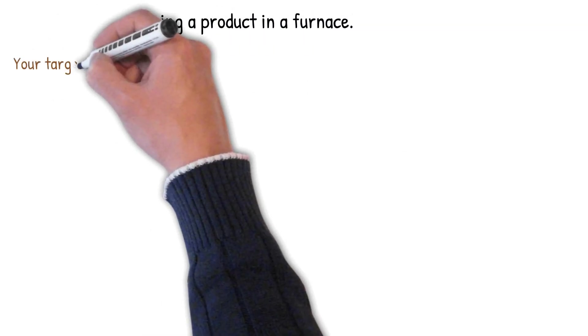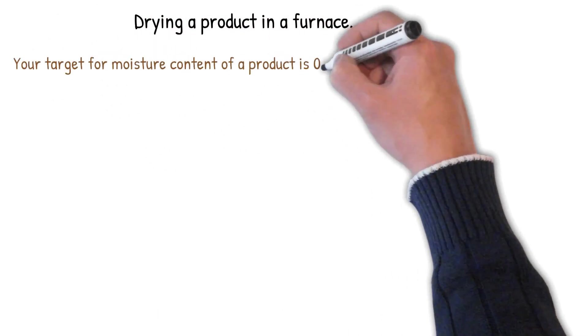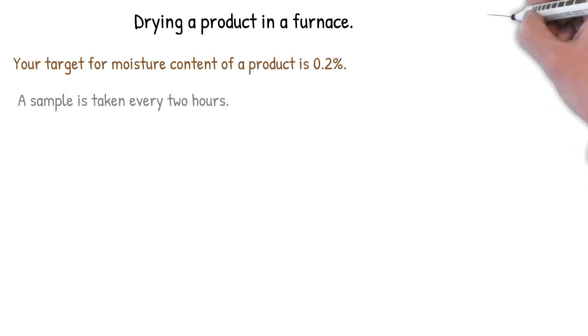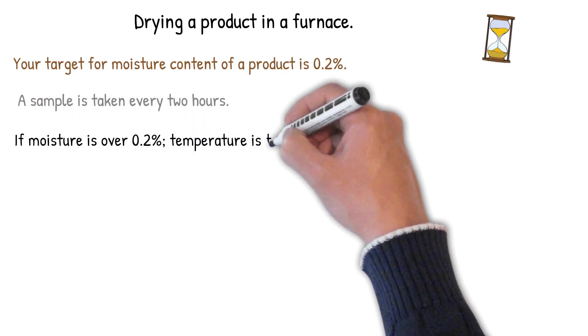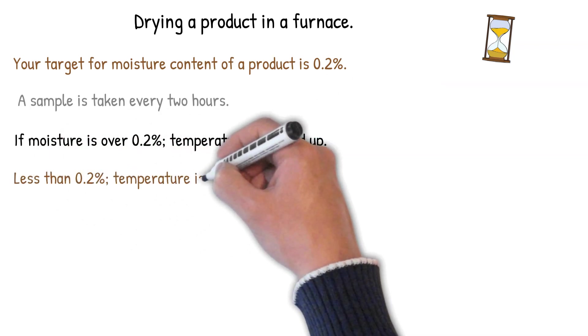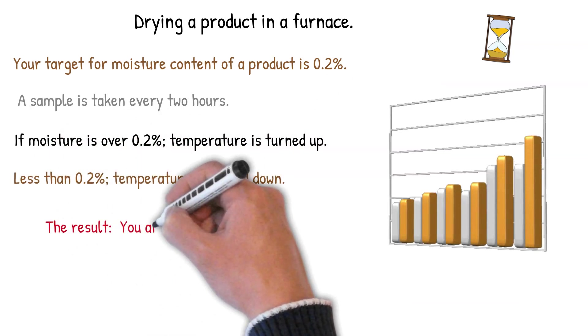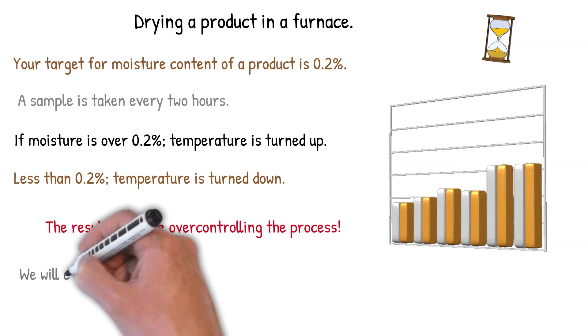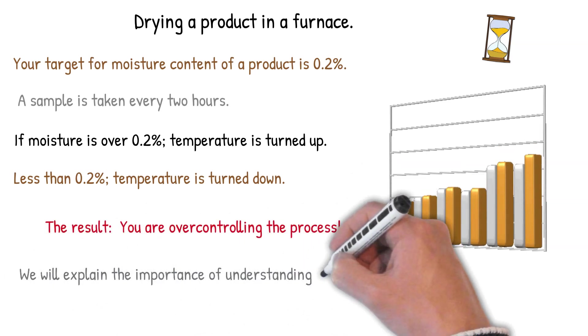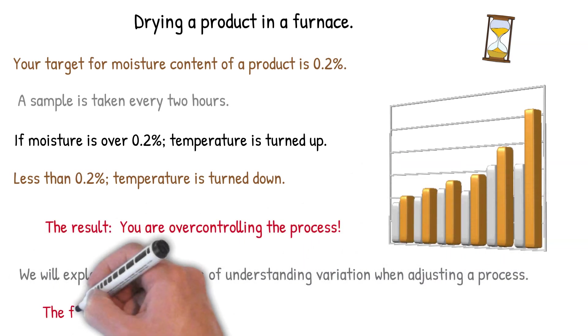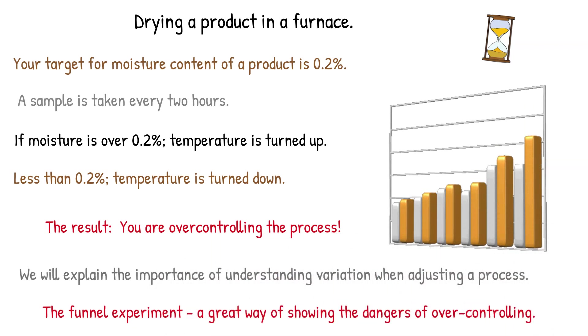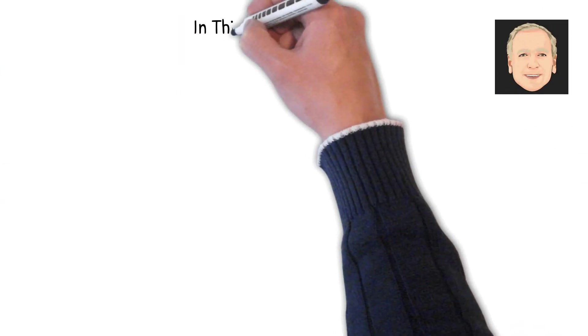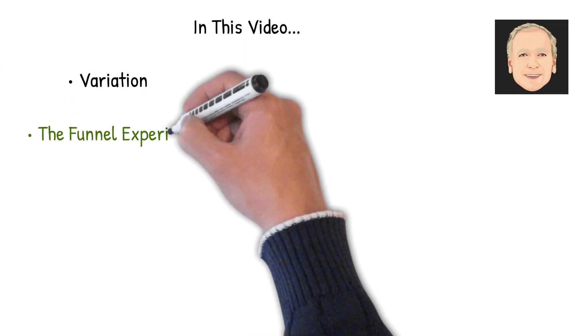Suppose you dry a product in a furnace. Your target for moisture content is 0.2%. You take a sample every two hours and measure it for moisture. If that moisture content's over 0.2%, you turn the temperature up so it dries it some more. If it's less than 0.2%, you turn it down. The result of this is you're over controlling your process. And we're going to explain the importance of understanding variation when you adjust a process. And the funnel experiment's a great way of demonstrating what can happen when you tamper with a process.